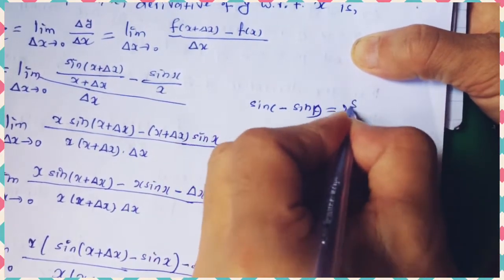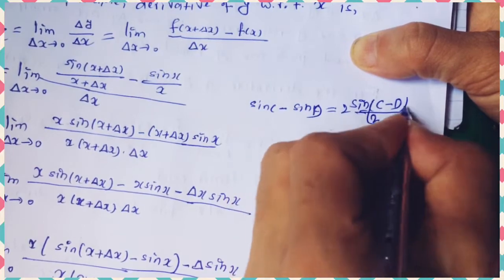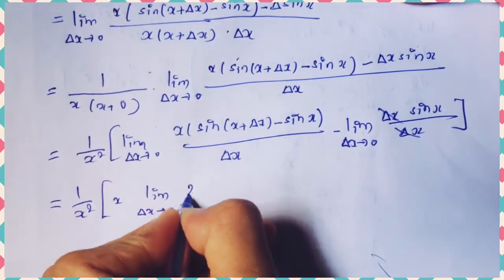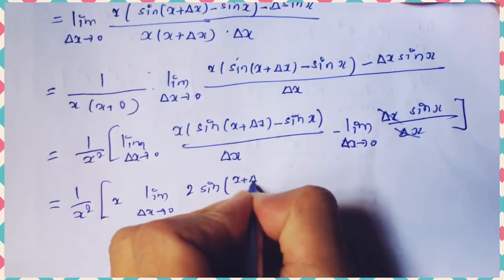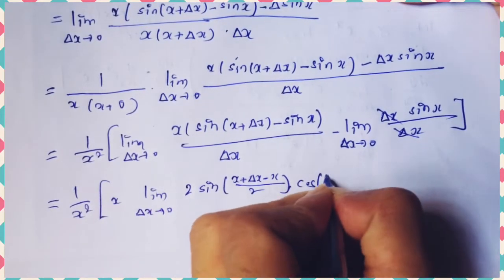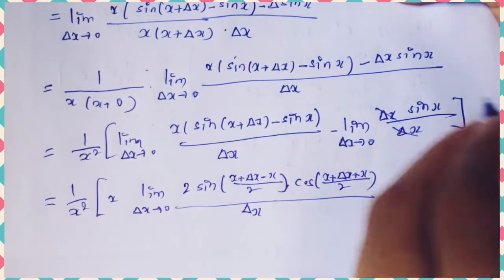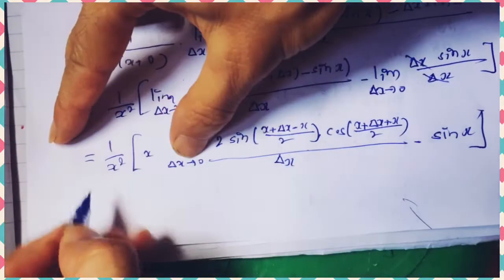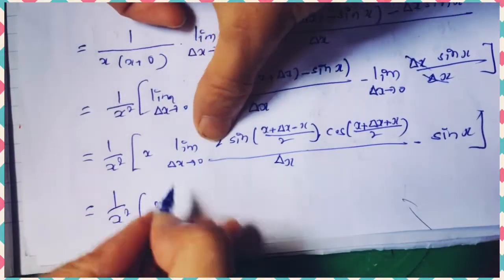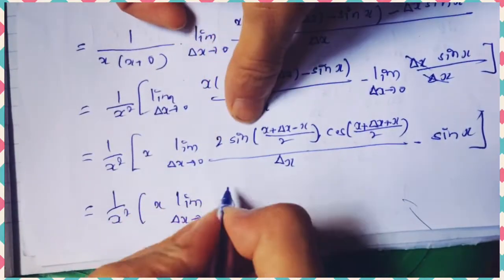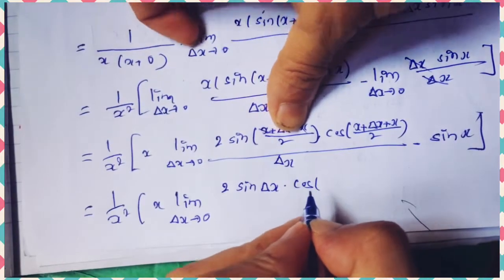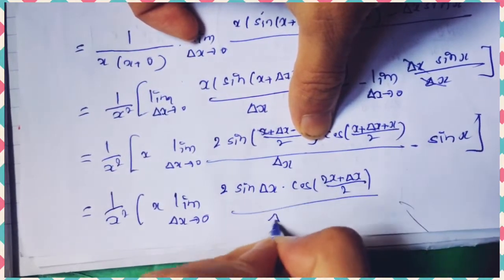For the first term, we use the relation: sin C − sin D = 2·sin[(C − D)/2]·cos[(C + D)/2]. Applying this, we get: x · lim(δx→0) 2·sin(δx/2)·cos[(2x + δx)/2] / δx, minus sin(x).